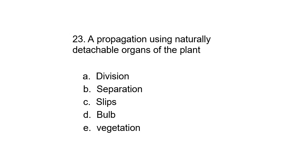Number 23: Propagation using naturally detachable organs of the plant — a) division, b) separation, c) slips, d) bulb, or e) vegetation. The answer is separation.